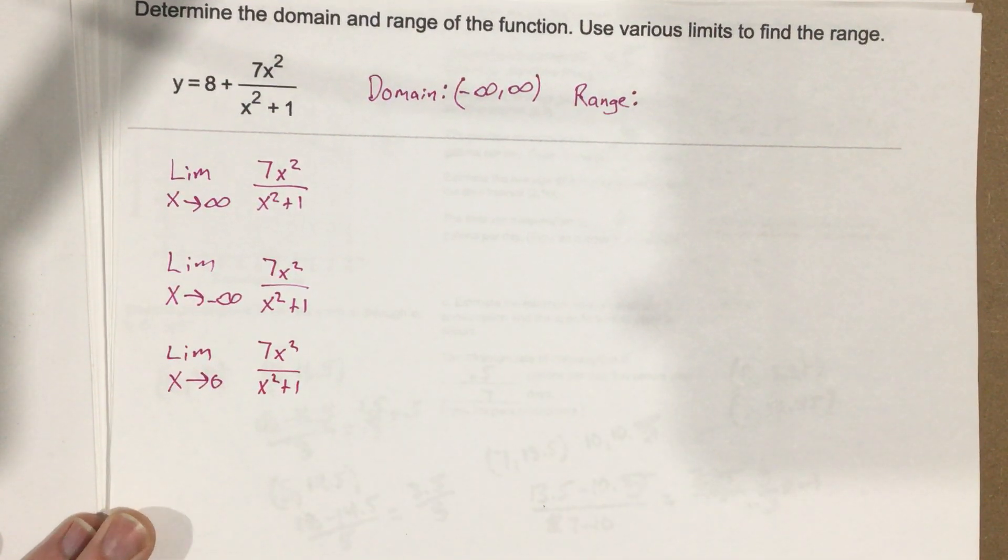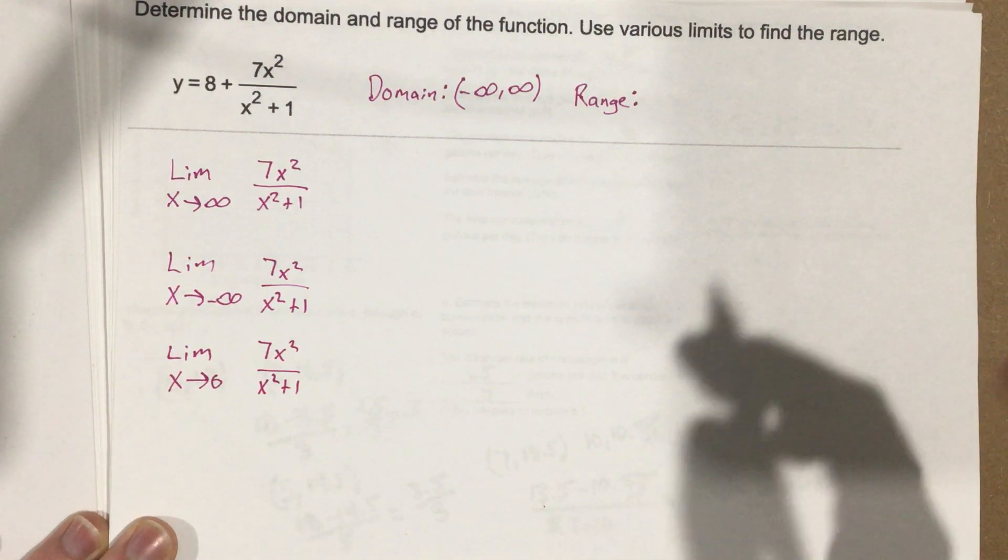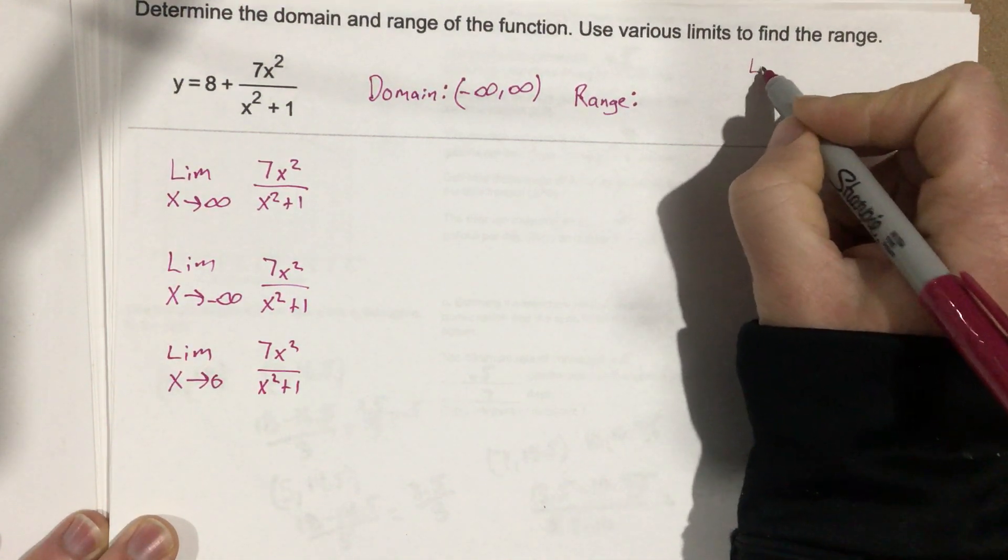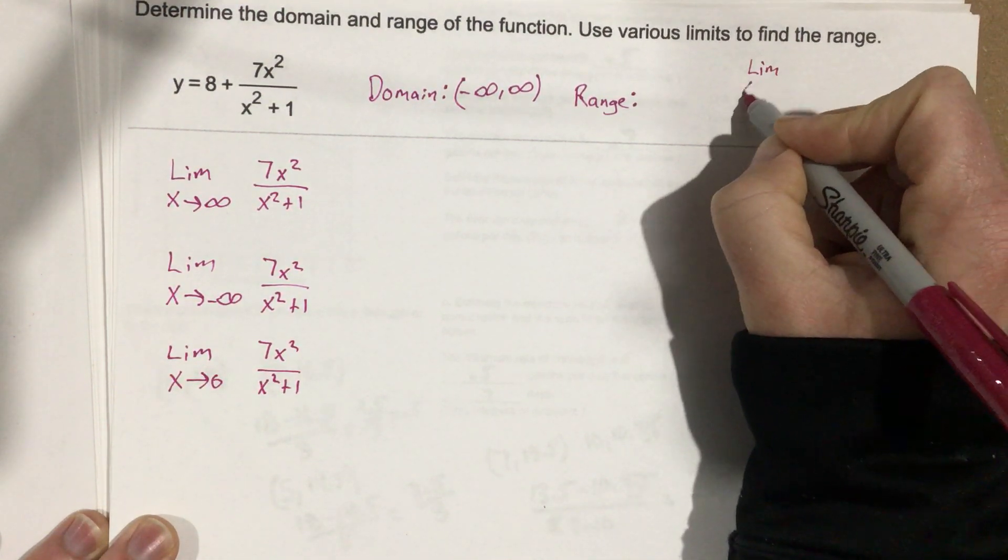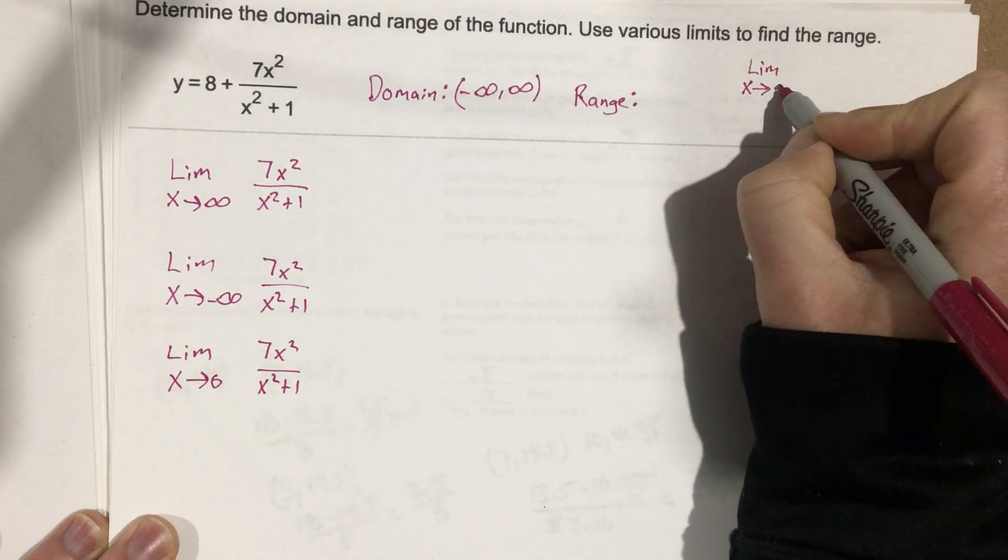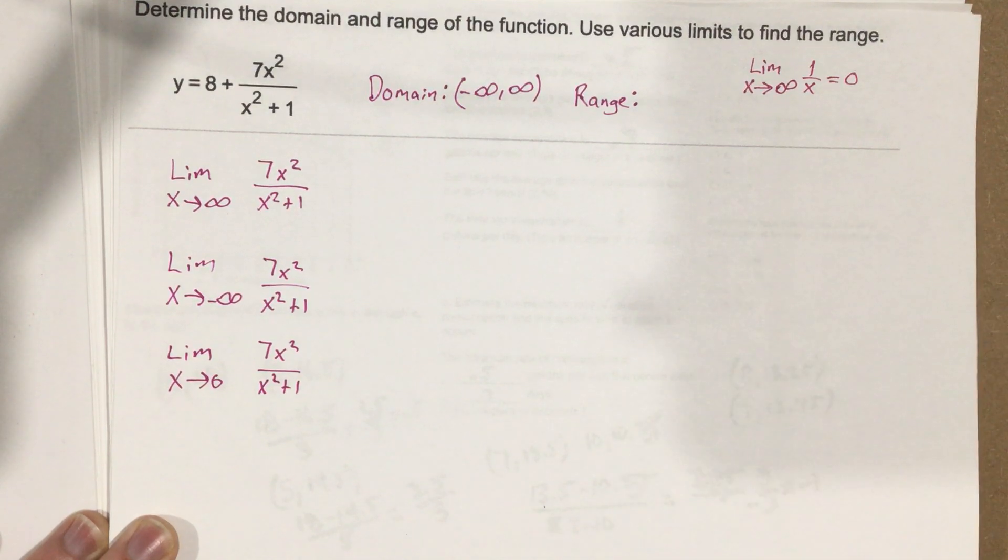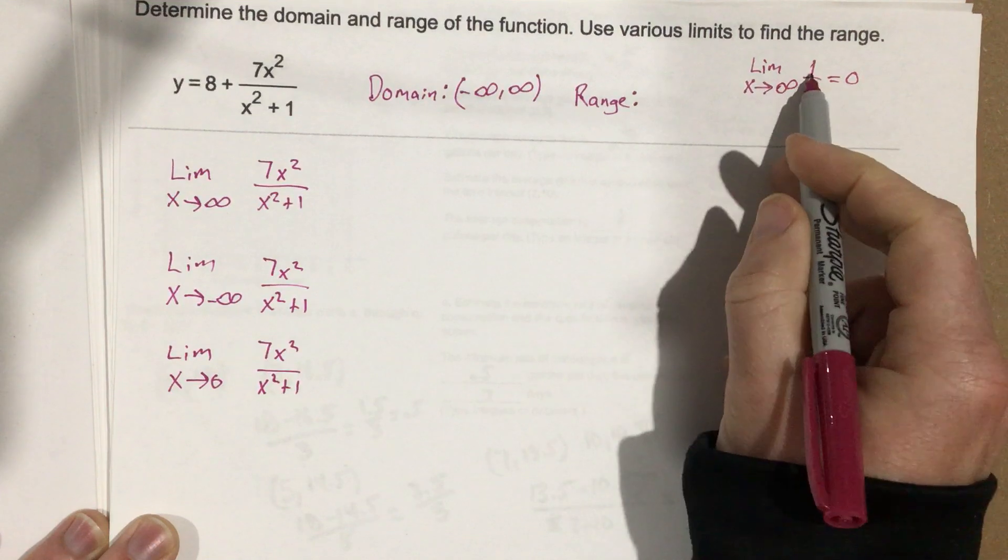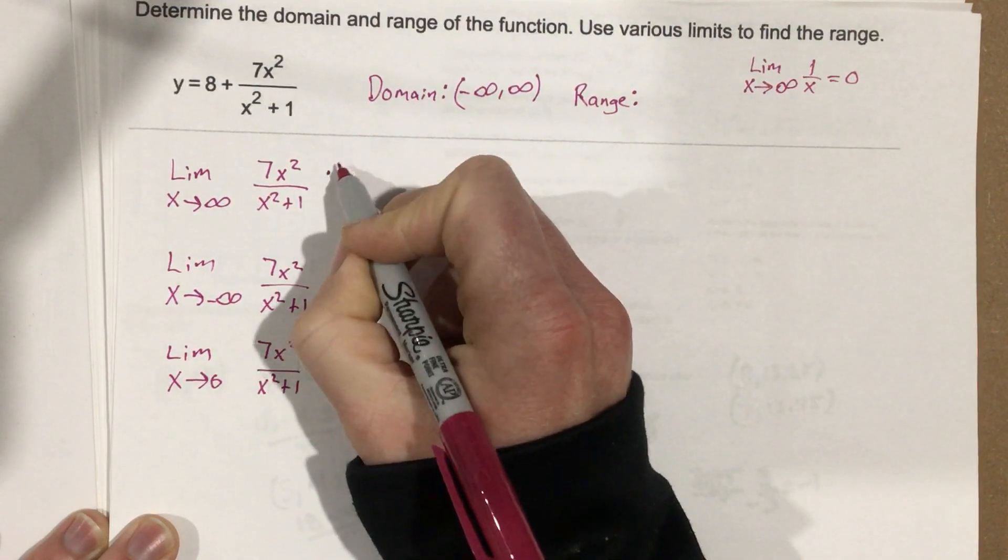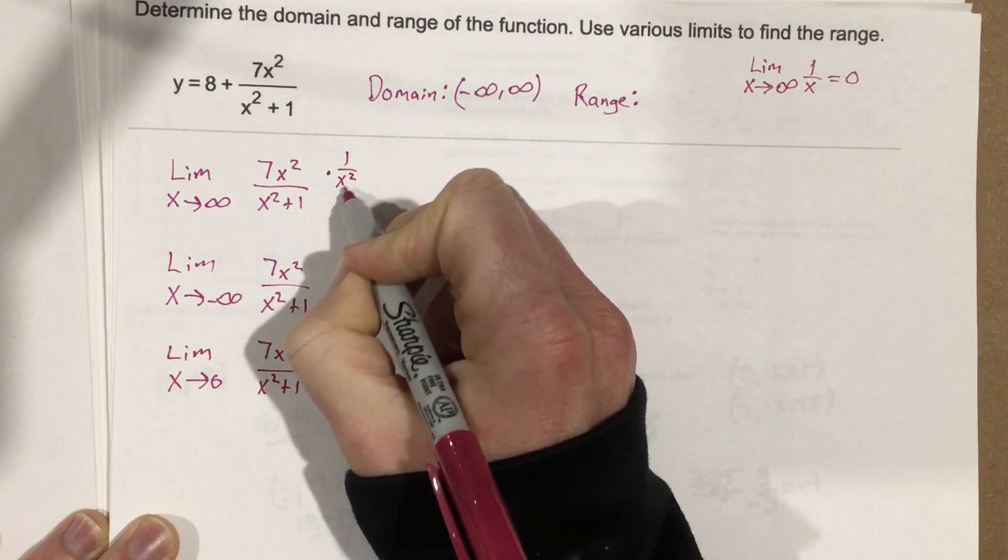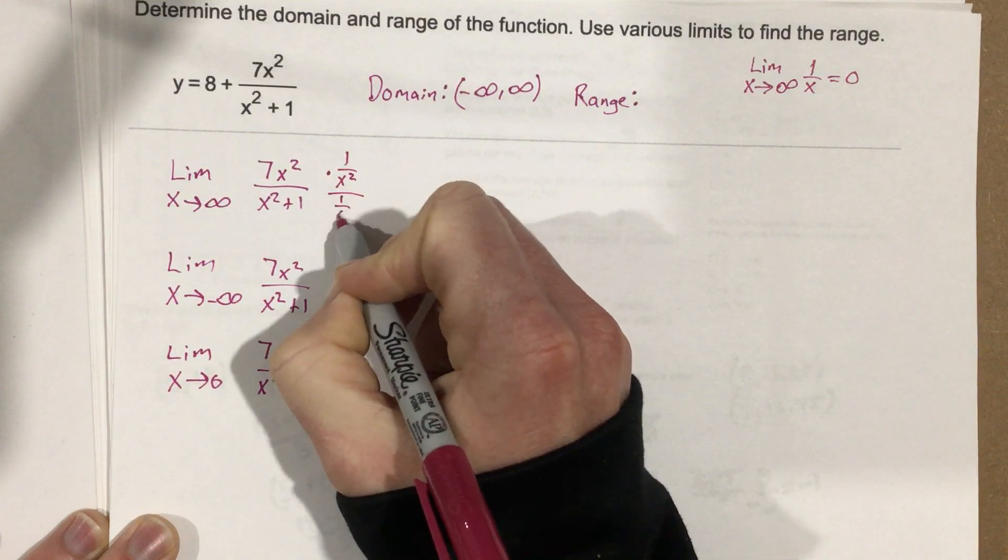Let's use our rule, or limit that we came up with earlier, which is limit as x approaches infinity for 1 over x equals 0. So we're going to try and get this rational function to have some 1 over x's in it. We're going to multiply the top by 1 over x squared and the bottom by 1 over x squared.